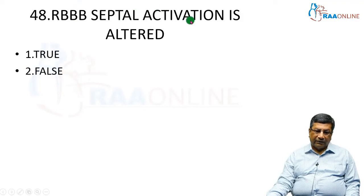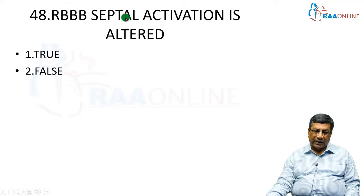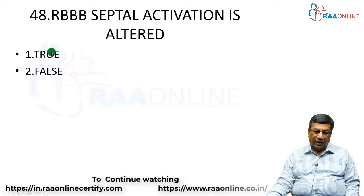In right bundle branch block, septal activation is altered — I am asking you whether this statement is true or false. In right bundle branch block, normal septal activation is done by the left bundle from left to right. In right bundle branch block, the left bundle is not affected, so the left bundle continues to do its normal septal activation from left to right, resulting in a small R wave in V1 and a small Q wave in V5 and V6. So in right bundle branch block, septal activation is not altered.